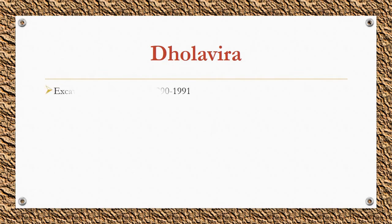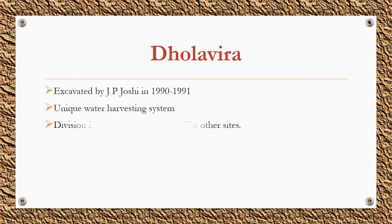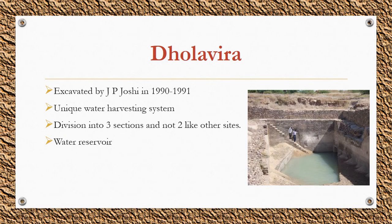Dholavira was excavated by J.P. Joshi in 1990 to 1991. It has a unique water harvesting system. Its most unique feature is its division into not two but three sections. An inscription comprising ten large-sized signs of Harappan script, similar to a signboard, is observed here. It shows all three phases of Harappan culture and is situated in Gujarat, with a water reservoir.